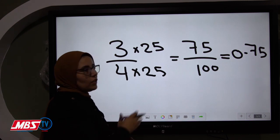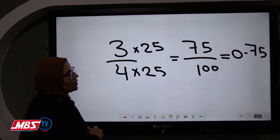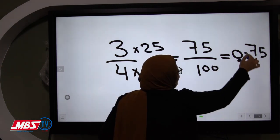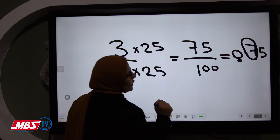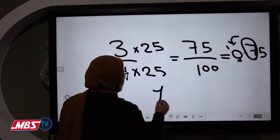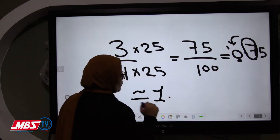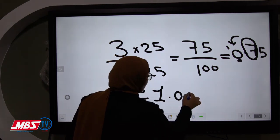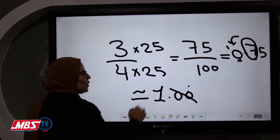Now we have the decimal number 0.75. We approximate to the nearest unit. The unit digit is 0, and in the tenth place we have 7. Is 7 poor or rich? Seven is rich, so we give one to the unit. The 0 becomes 1. We write the approximation sign, replace the decimal digits with zeros, and since we can ignore trailing zeros, the answer is 1.